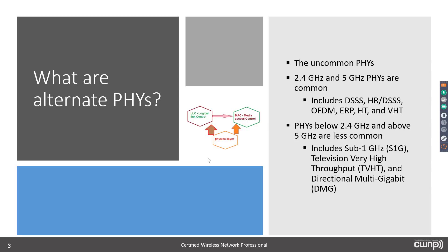When I talk about alternate PHYs, I'm talking about the uncommon PHYs. The 2.4 and 5 GHz PHYs are common — DSSS was there in the beginning; HRDSSS and OFDM were there as of 1999; ERP came along in 2003; HT in 2009; and VHT just a few years ago with 802.11ac. DSSS, HRDSSS, and ERP as well as HT are 2.4 GHz. OFDM, HT, and VHT are 5 GHz — HT is the only one that works in both.